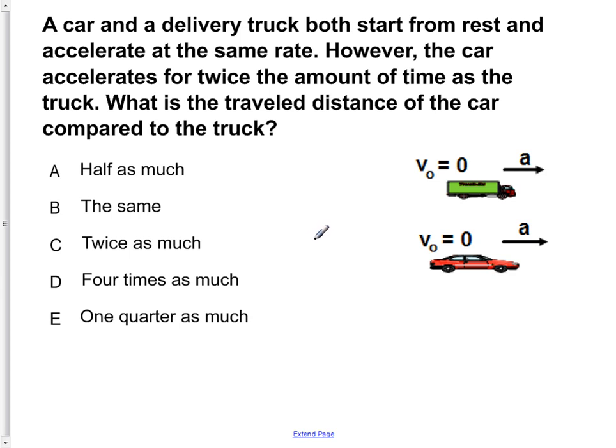A car and a delivery truck both start from rest and accelerate at the same rate. However, the car accelerates for twice the amount of time as the truck. What is the travel distance of the car compared to the truck?